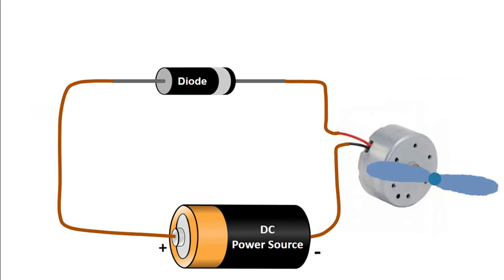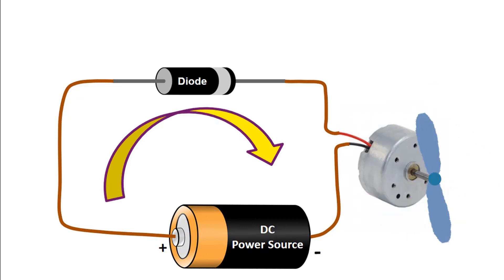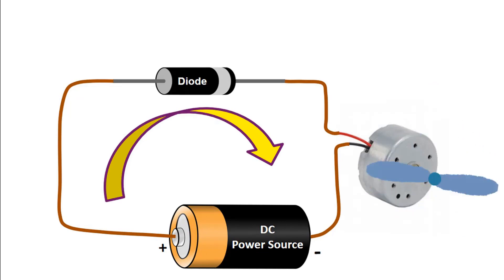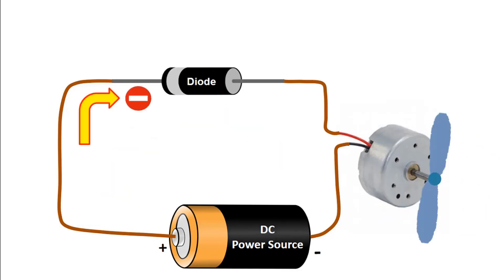Or, if we connect a motor instead of a lamp — when the diode is connected correctly, the motor will start because the current will flow through the circuit. But if we connect the diode in reverse, no current will flow through the circuit and the motor will not start.